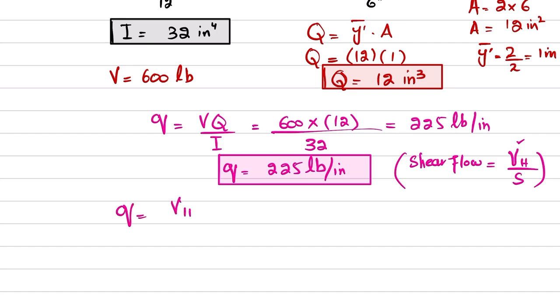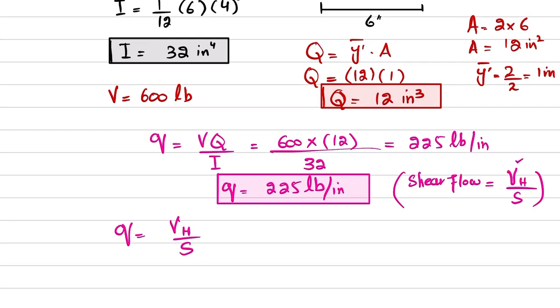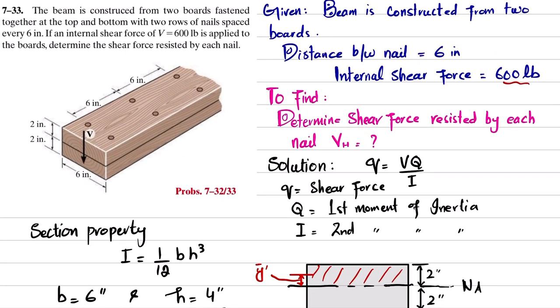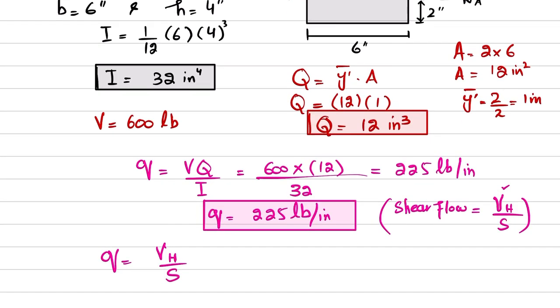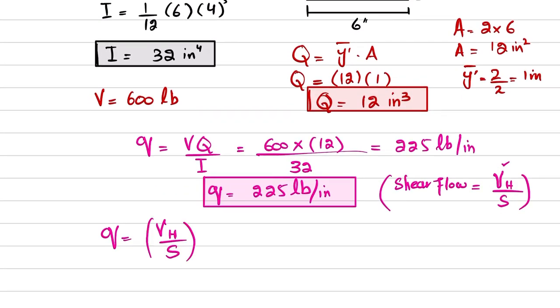As we know that q is horizontal shear force per unit length, and you can see there are two rows of nails, so it will be equal to two times Vh over s. From here you will get Vh equals q times s divided by two.